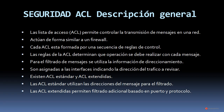En primer lugar vamos a repasar la descripción general. Las listas de acceso o ACL permiten controlar la transmisión de mensajes en una red. Actúan de forma similar a un firewall. Cada ACL está formada por una secuencia de reglas de control que van a determinar qué operaciones se deben realizar con cada mensaje. Son asignadas a las interfaces indicando la dirección del tráfico, por ejemplo de entrada o de salida, lo cual va a definir la forma en que trabaja el dispositivo.